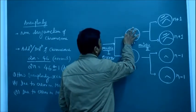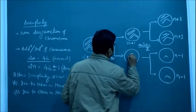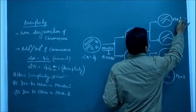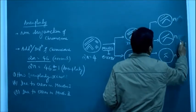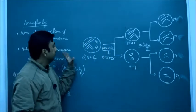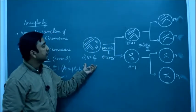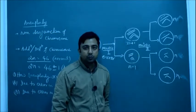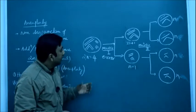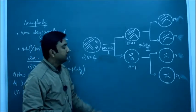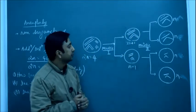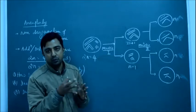Now we will consider the error in meiosis 2. In a normal division, we start with 2n equal to 4 and end with n equal to 2. What happens if there is an error in meiosis 2 — that is, an unequal separation of chromosomes during meiosis 2?